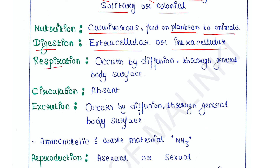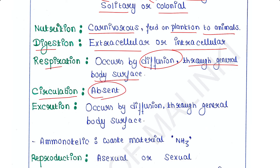Respiration occurs by diffusion through the general body surface. They do not have any proper respiratory system. Circulation or a circulatory system is also absent.